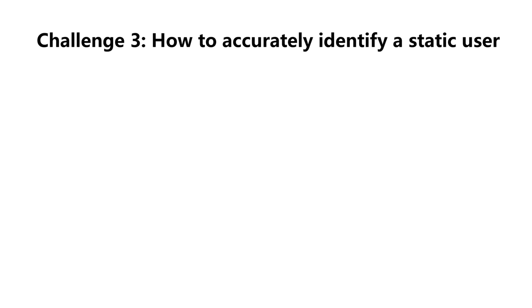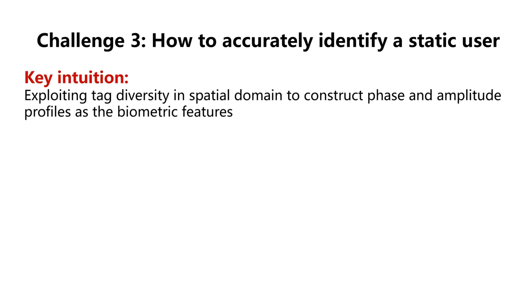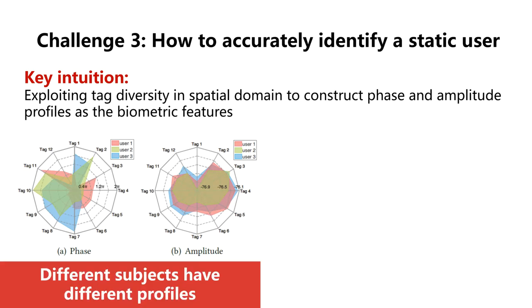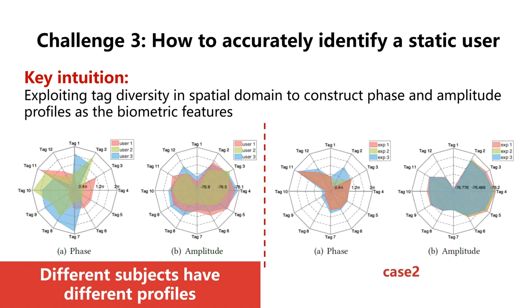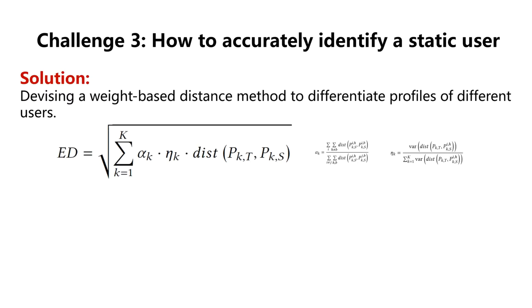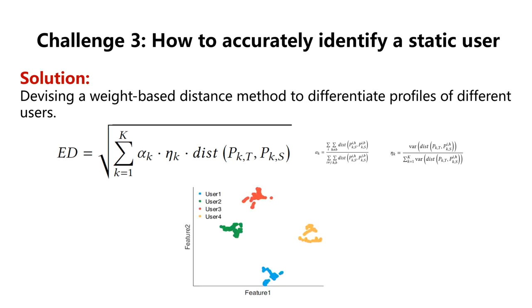The last challenge is how to accurately identify a static user. A key intuition is exploiting tag diversity in the spatial domain to construct phase and amplitude profiles as biometric features. As shown in the figures, we can see that different users exhibit different phase and amplitude profiles constructed with data collected from spatially deployed tags. However, when we let one subject stand still at a fixed position and repeatedly collect readings three times, we can see that the readings of some tags are stable while others are not. To overcome this issue, we devise a weight-based distance method to differentiate profiles of different users, where the first parameter represents the ability to identify different users, and the second parameter represents the similarity between training and testing profiles. Finally, we use the same visualization tool to present the features, and we can see that different users have different distributions.